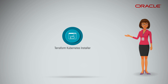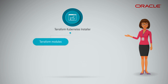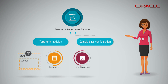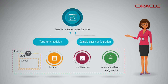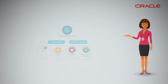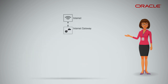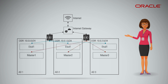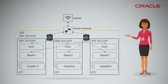This Terraform Kubernetes installer provides a set of Terraform modules and sample-based configuration to provision and configure a virtual cloud network (VCN) and subnets, instances for the Kubernetes control plane to run on, and load balancers to front-end the etcd and Kubernetes master clusters in your tenancy on Oracle Cloud Infrastructure. The example configuration supports input variables that allow you to specify the Kubernetes master and node shapes, sizes, and how they are placed across the availability domains (ADs).